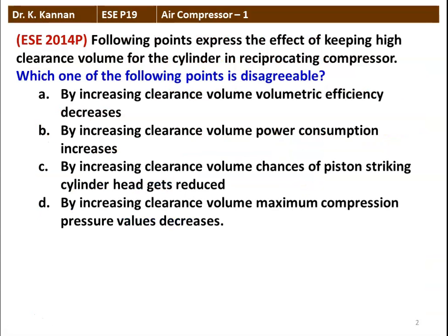The first question from the 2014 question paper: Following points express the effect of keeping high clearance volume for the cylinder in a reciprocating compressor. Which one of the following points is disagreeable? By increasing clearance volume, volumetric efficiency decreases. By increasing clearance volume, power consumption increases. By increasing clearance volume, the chances of piston striking the cylinder head gets reduced. By increasing clearance volume, maximum compression pressure value decreases. The disagreeable point is that power consumption increases — the other three points are true.